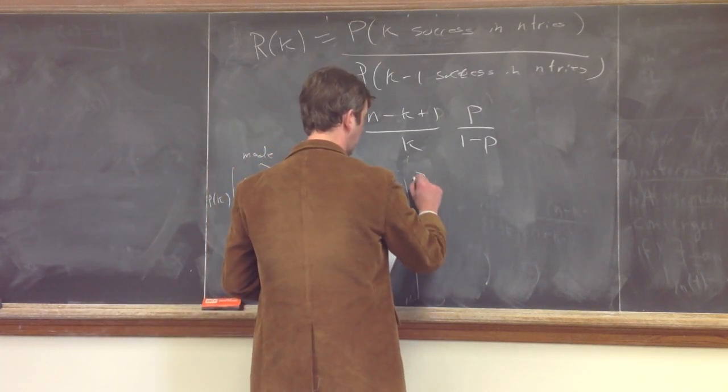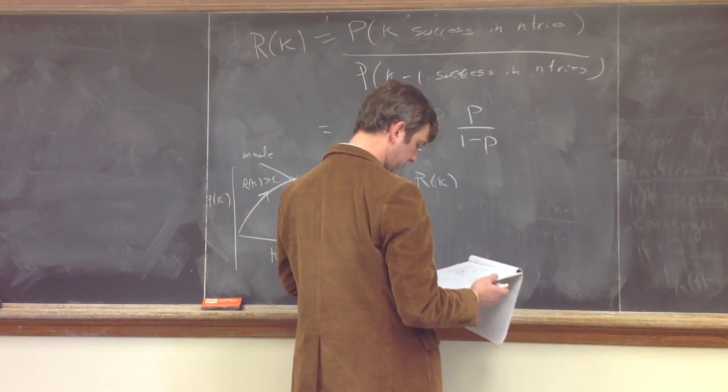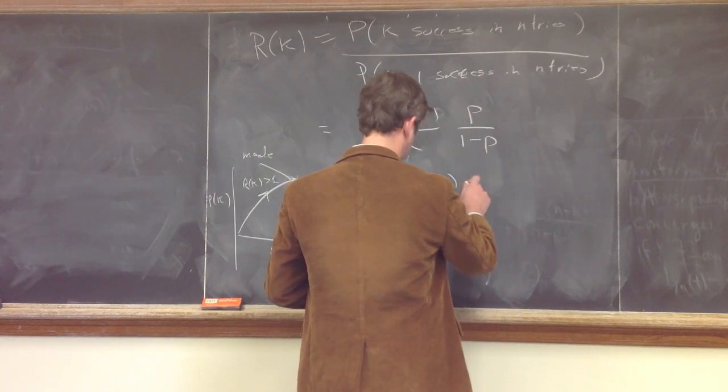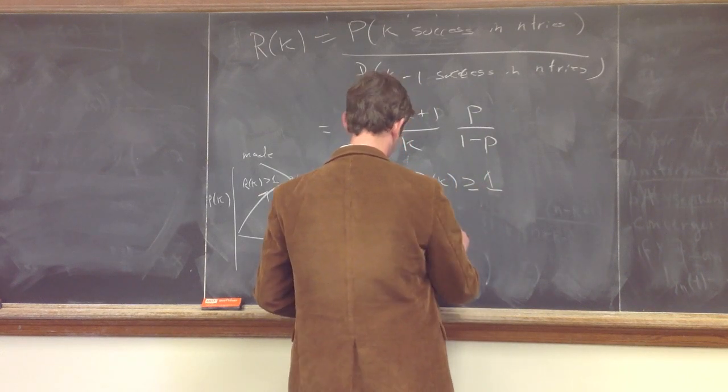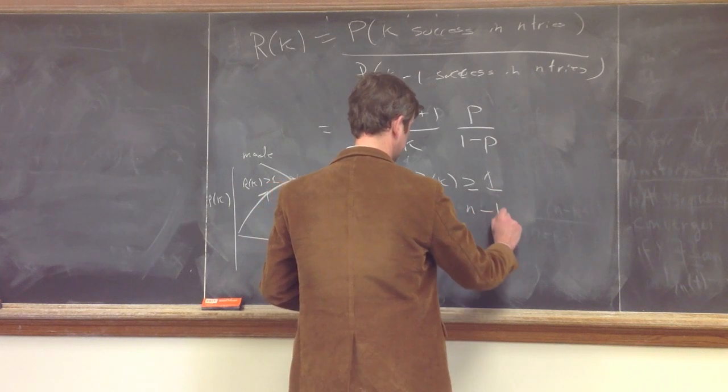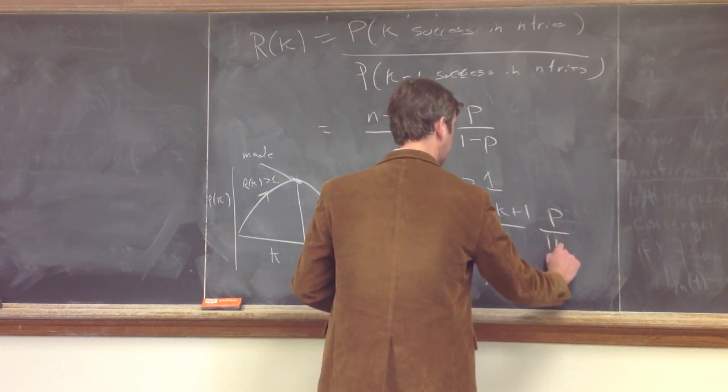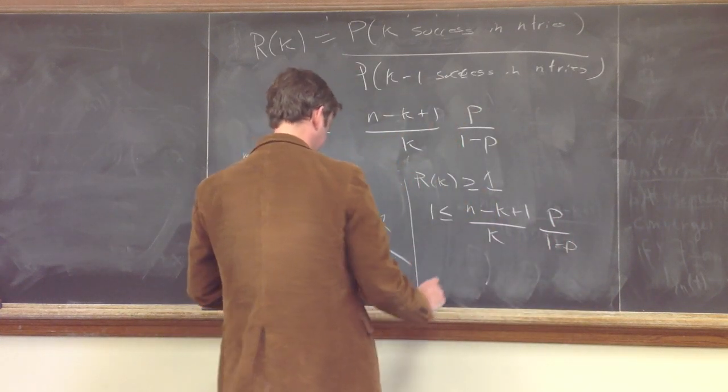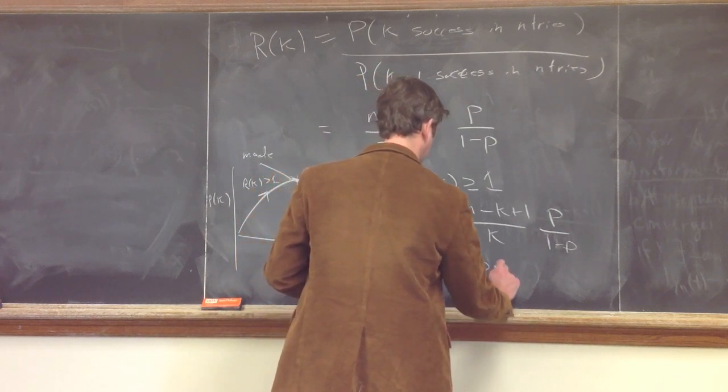Greater than or equal to one. And if you solve that, what we find is that we want one less than or equal to n minus k plus one over k times p over one minus p. Just writing this in. And if you solve that, you'll find that k has to be less than or equal to n p plus p.